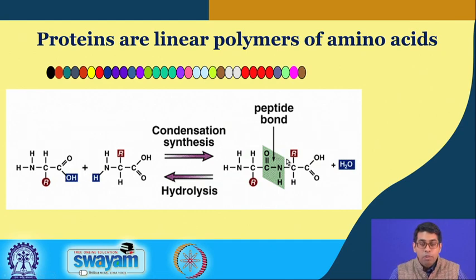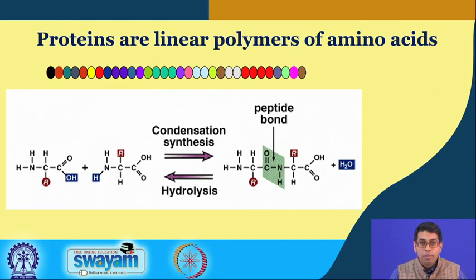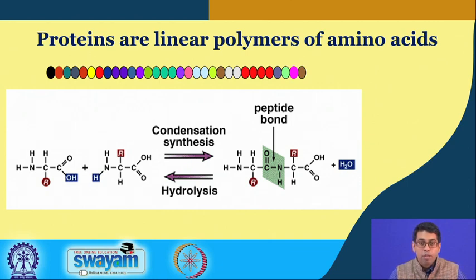This linear molecule spontaneously folds into a tertiary structure, resulting in a particular shape of that protein, and this particular shape is very important for its function. For example, enzymes are natural catalysts which can speed up reactions to a very high degree, and the capability of catalyzing reactions depends on the arrangement of the functional groups in its active site. This active site is maintained in a particular shape by the tertiary structure of that enzyme. So the tertiary structure of a protein is very important.